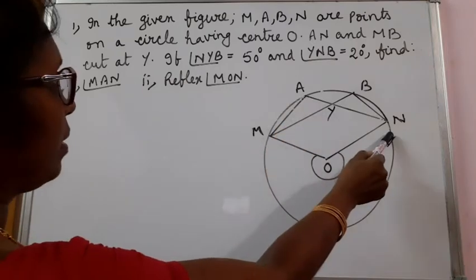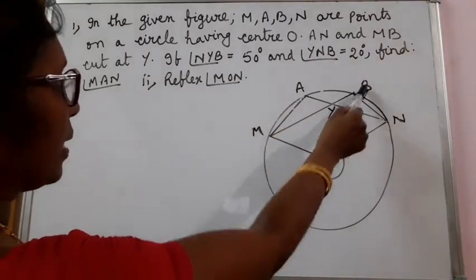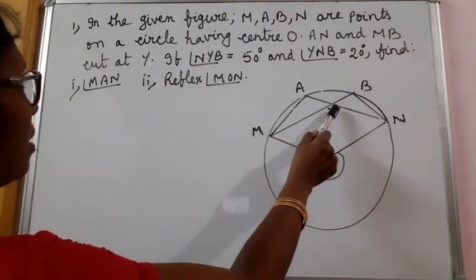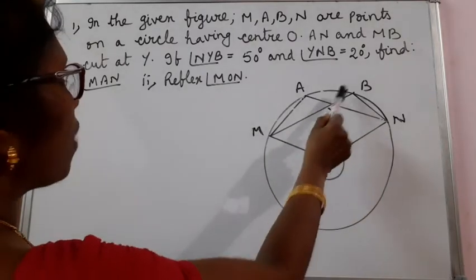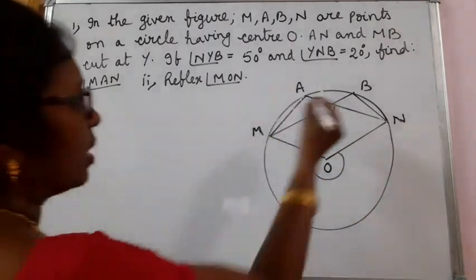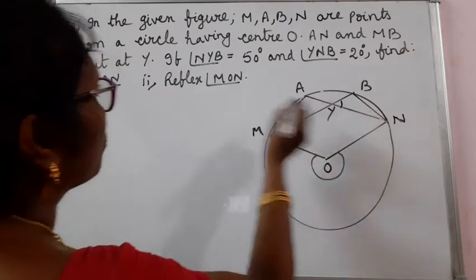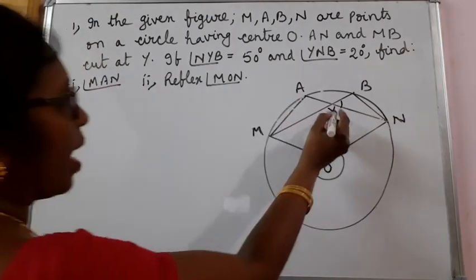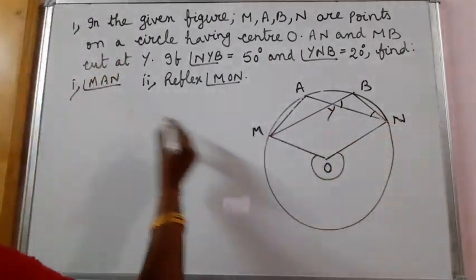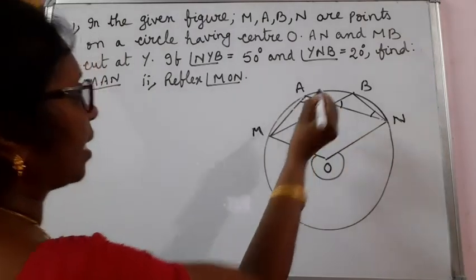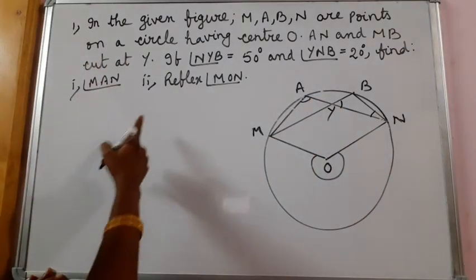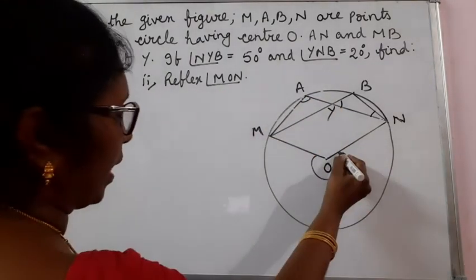AN and MB cut at Y. If angle NYB is 50 degrees and angle YNB is 20 degrees, find angle MAN. And also, find reflex angle MON.